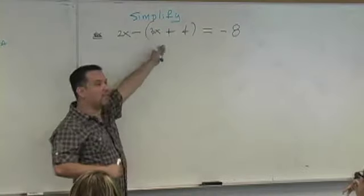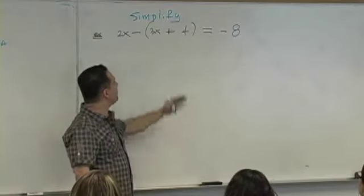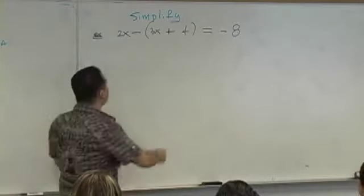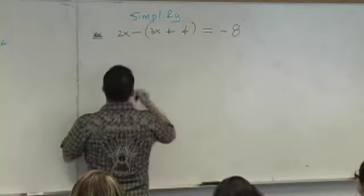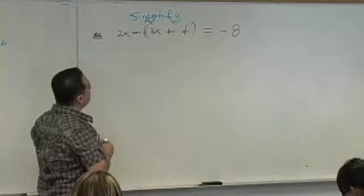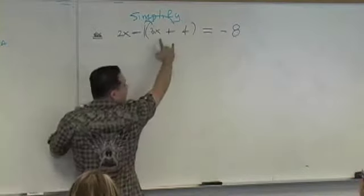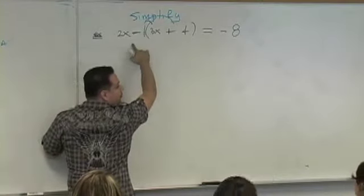And how do you simplify in this example? Can you divide both sides by 2 or something? No. So you're going to simplify this. What did this minus mean? Wasn't that negative 1? And then you're going to distribute this negative 1, right?